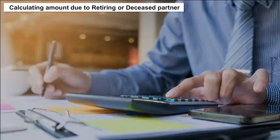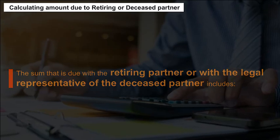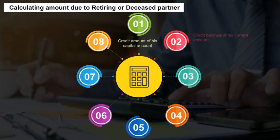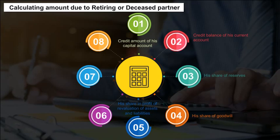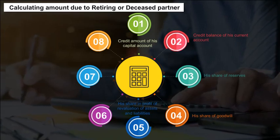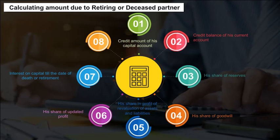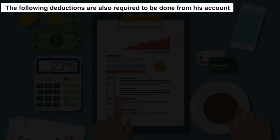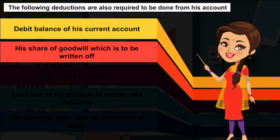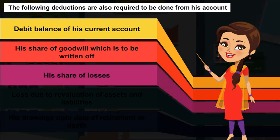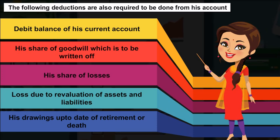The sum due to the retiring partner or the legal representative of the deceased partner includes: credit amount of his capital account, credit balance of his current account, his share of reserves, his share of goodwill, his share in profit from revaluation of assets and liabilities, his share of updated profit, interest on capital till the date of death or retirement, and salary or commission due. Deductions include: debit balance of his current account, his share of goodwill to be written off, his share of losses from revaluation, and his drawings up to the date of retirement or death.